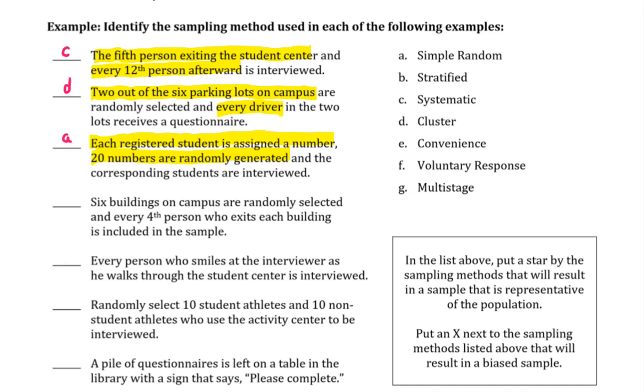Next one. Six buildings on campus are randomly selected, and every fourth person who exits each building is included in the sample. So here we would like to see the six buildings as different clusters, but we're not sampling everybody in the building. We're taking every fourth person, which is more of a systematic method. So this would be describing a multi-stage sampling method.